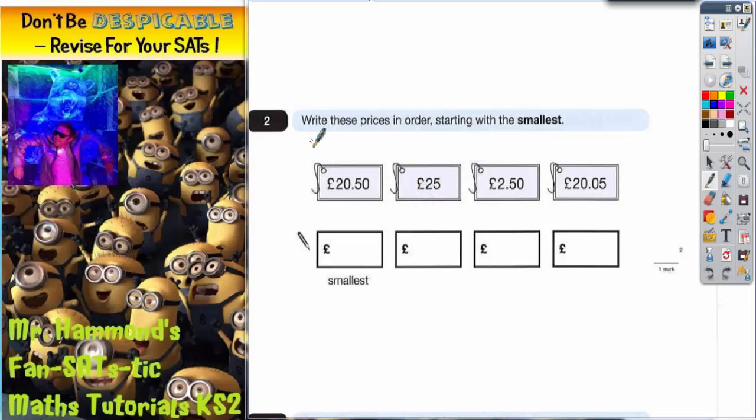Question 2 says write these prices in order starting with the smallest, so you've got £20.50, £25, £2.50 and £20.05. What we're going to do is I'm going to underline the pounds, so we've got £20, this one starts with £25, this one starts with £2, this one starts with £20.